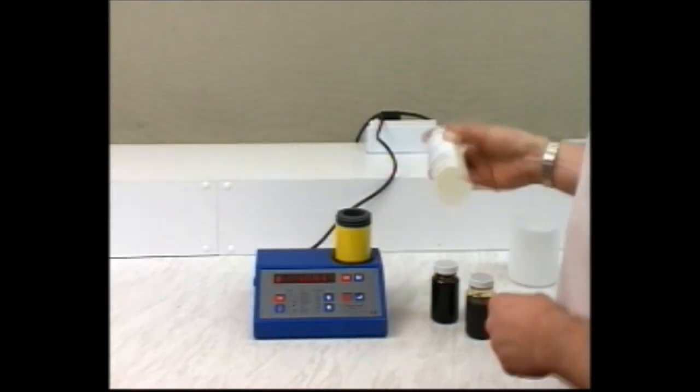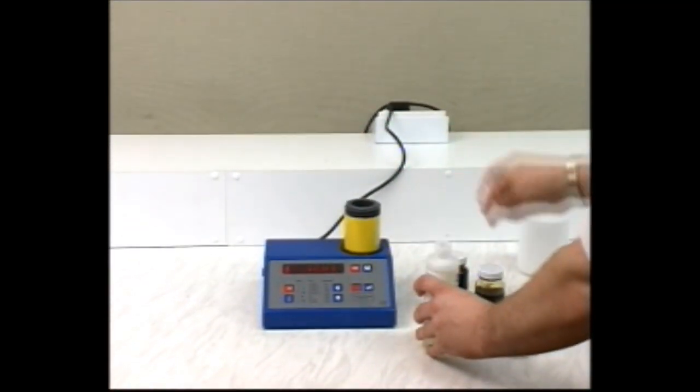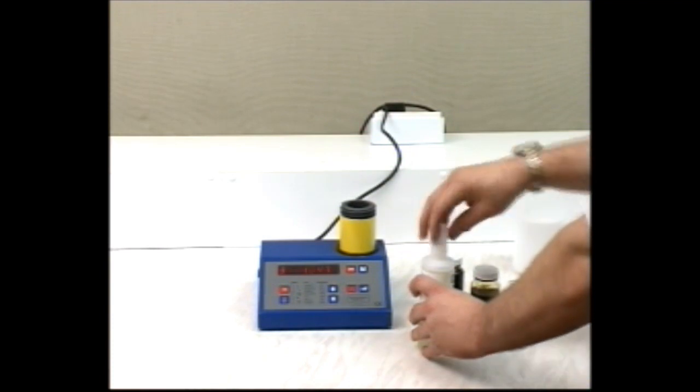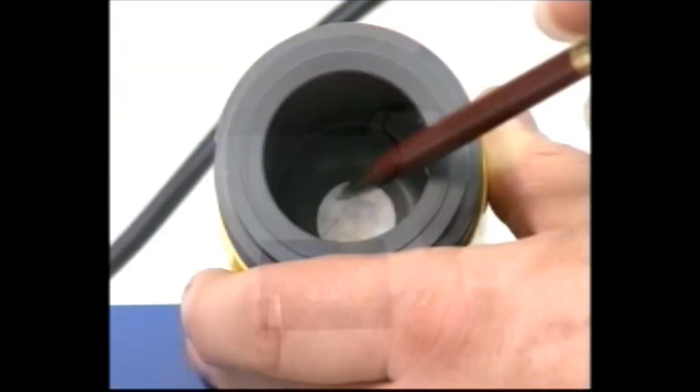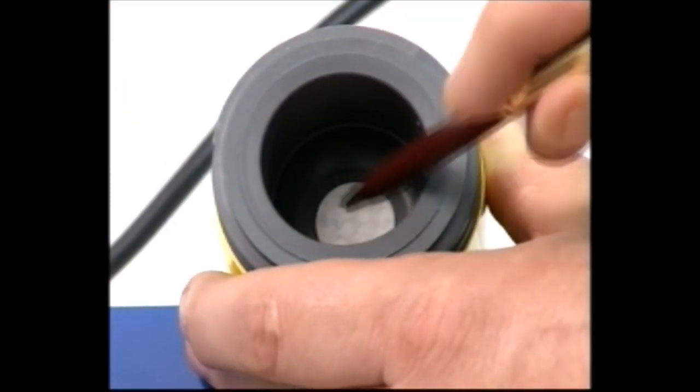Shake the reagent C bottle, attach the pourer spout, and fill the TBN cell with it up to the internal lip inside. Be careful not to damage the transducer.